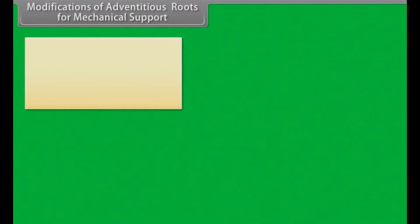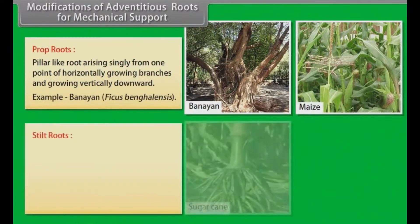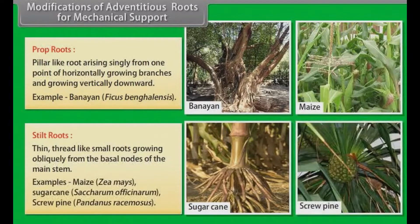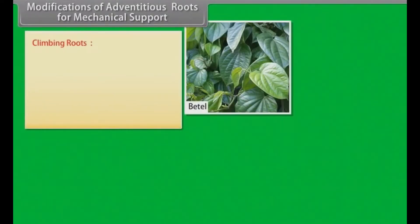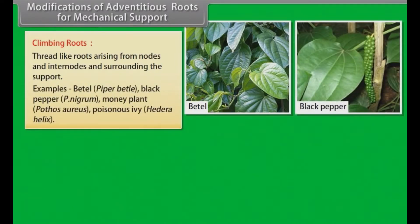Modifications of adventitious roots for mechanical support. Prop roots: Pillar-like roots arising singly from one point of horizontally growing branches and growing vertically downward. Example: banyan. Stilt roots: Thin, thread-like small roots growing obliquely from the basal nodes of the main stem. Examples: maize, sugarcane, screw pine. Climbing roots: Thread-like roots arising from nodes and internodes and surrounding the support. Examples: betel, black pepper, money plant, poison ivy.